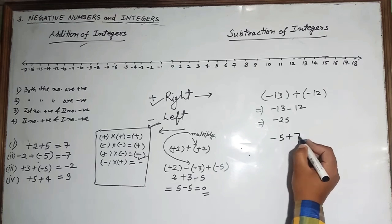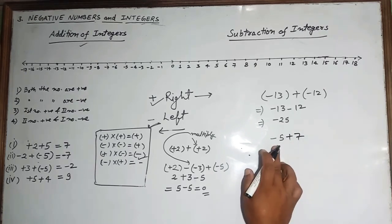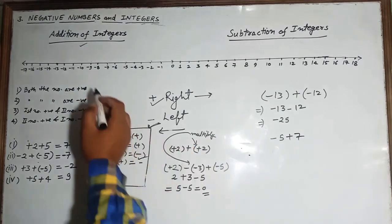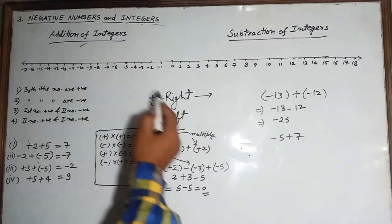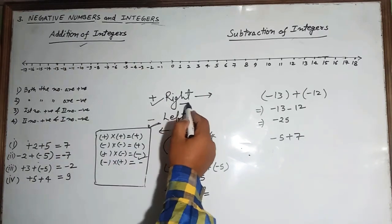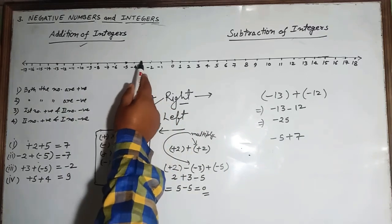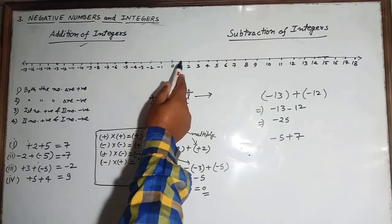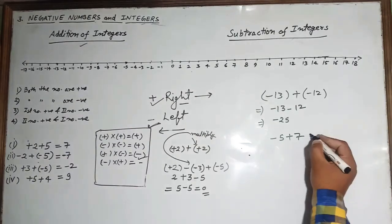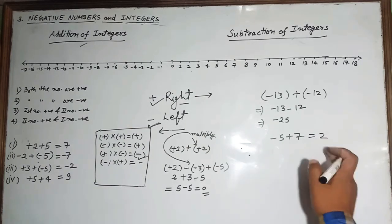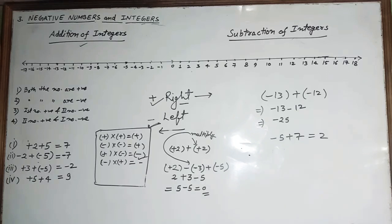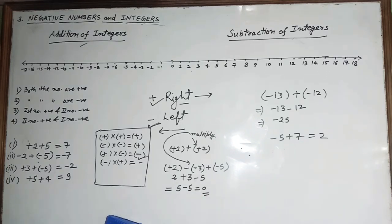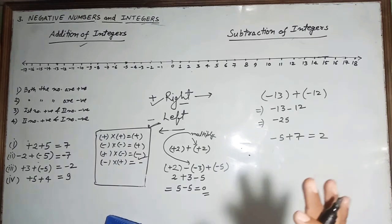Another example: minus 5 plus 7. On the number line, minus 5 is here, and plus 7 means we move 7 steps to the right — 1, 2, 3, 4, 5, 6, 7 — so our answer is 2. You can also simply compute 7 minus 5 equals 2.